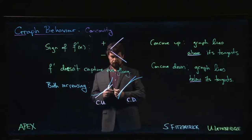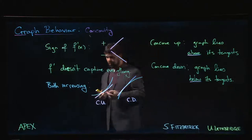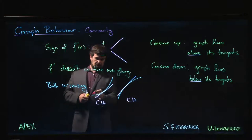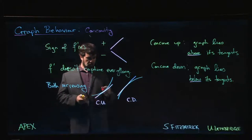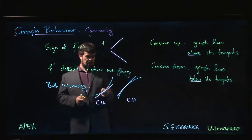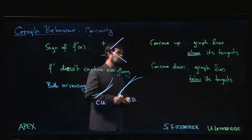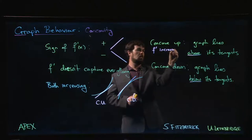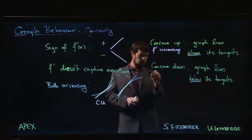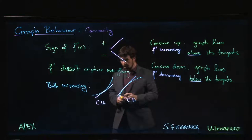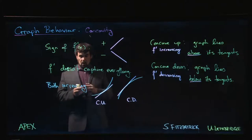Another way to define concave up and concave down: if the graph lies above the tangent, the slope has to be increasing as we move from left to right. To pull up and away from the tangent, the slope must increase. The slope is given by the value of the first derivative, so concave up means that f prime is increasing, and concave down means that f prime is decreasing.